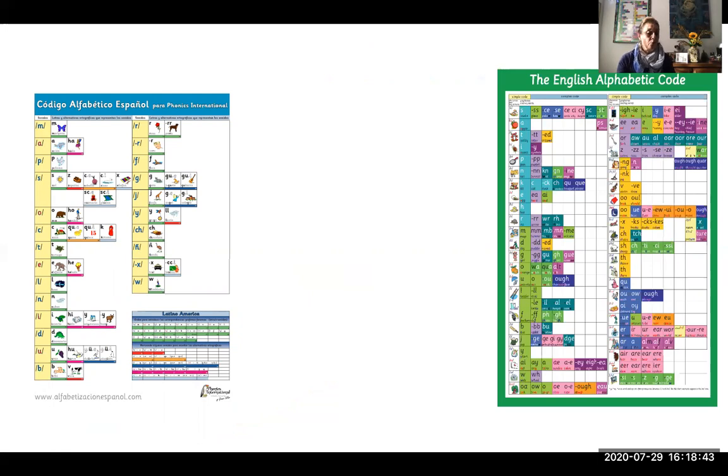These languages, on the whole, use one letter to represent one sound. That is to say, one grapheme or letter to represent one phoneme or sound. And they are very reliable in their sound-symbol relationship. They are known as transparent alphabetic codes.